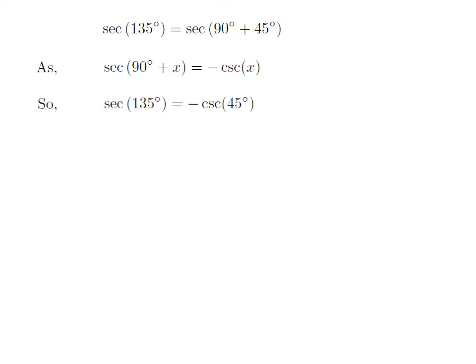Let us apply the above identity for secant of 135 degrees. Here x is 45 degrees, so secant of 135 degrees is equal to minus cosecant of 45 degrees.